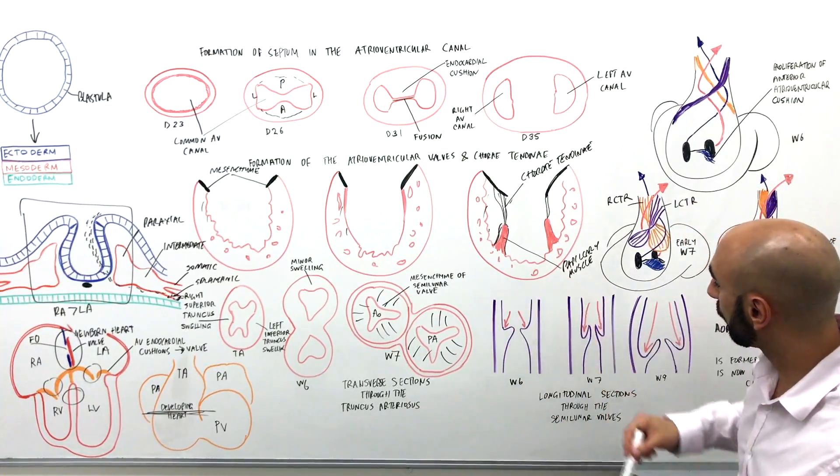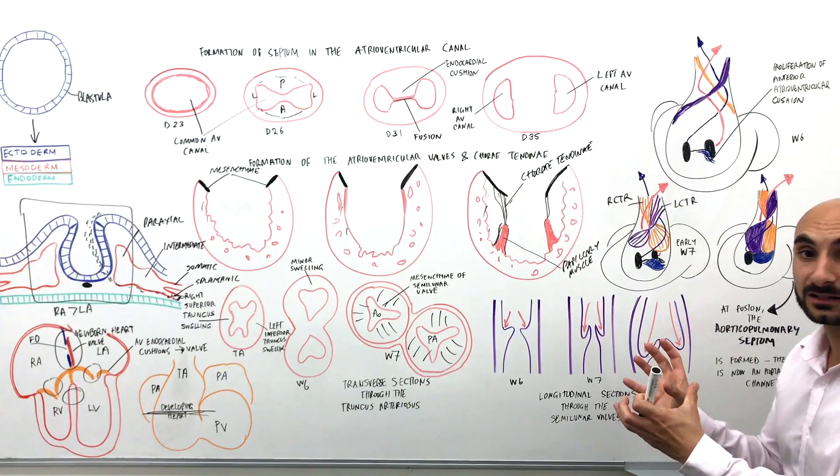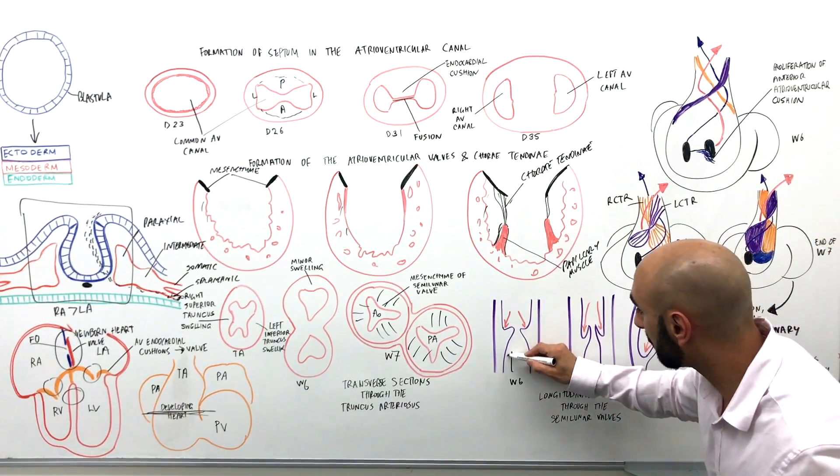If we have a look at it longitudinally, this is what we'll see. So with time, by week nine, you'll have more cupping of the valves so that they have that characteristic semilunar look. So these arrows are depicting the direction of which the valves are cupping and forming. So the blood flow is coming up this way.